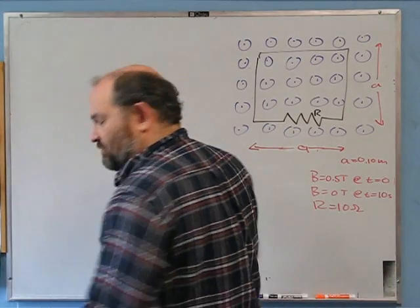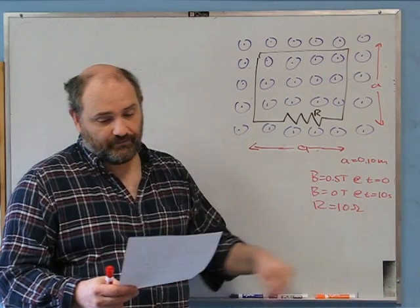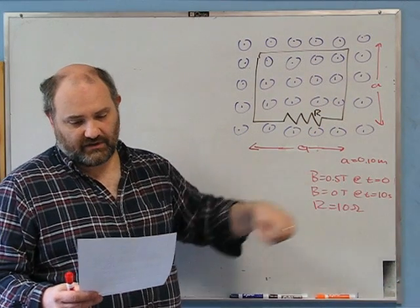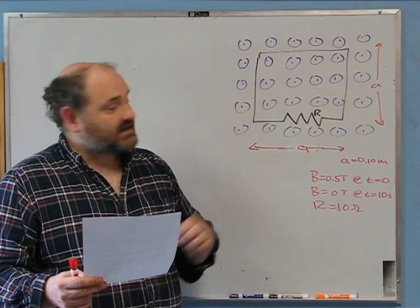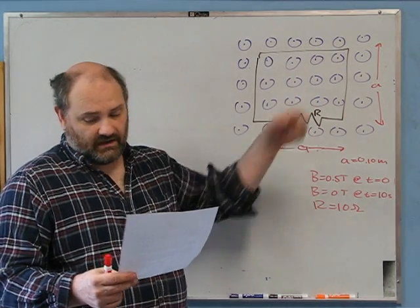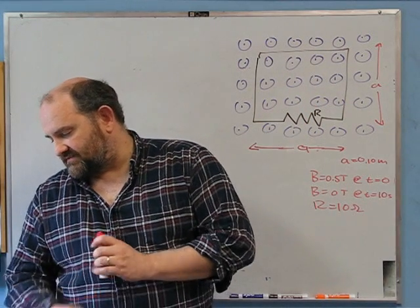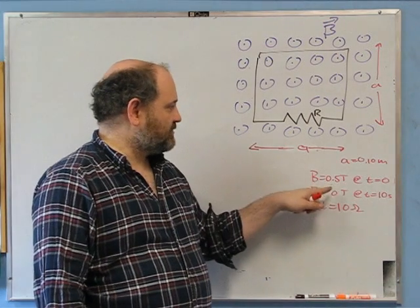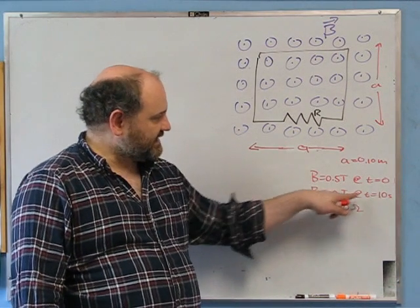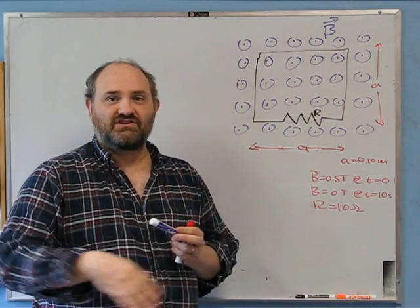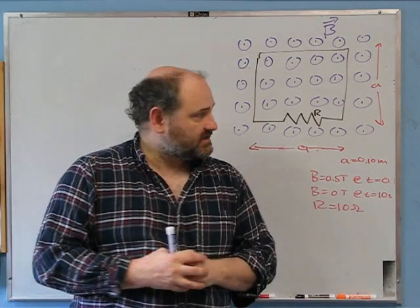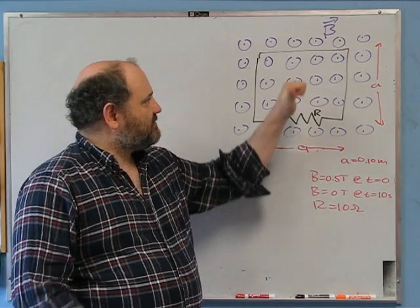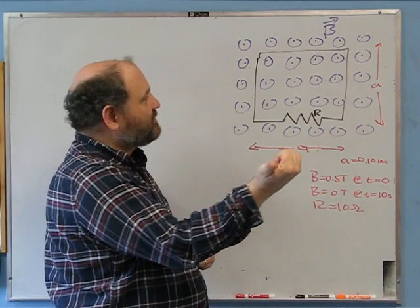In the second problem, we have a loop of wire with a 10-ohm resistor. The wire is 10 centimeters on a side, so a = 0.1 meters. The magnetic field, which is coming out of the page, is decreased from 0.5 tesla to 0 tesla steadily over 10 seconds. So at t = 0, B = 0.5 tesla; at t = 10 seconds, B = 0 tesla. The question is: what is the current in the wire — direction and magnitude through the resistor?